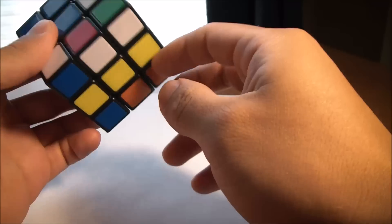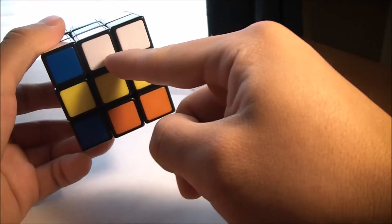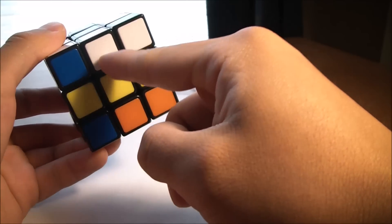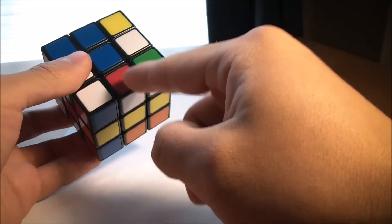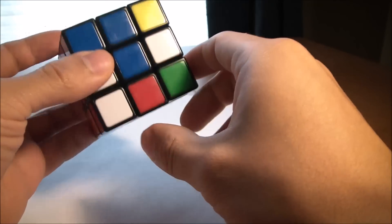If you just look down at the yellow side, there's a white piece with the yellow side, right? But this piece, you see, belongs with the red.